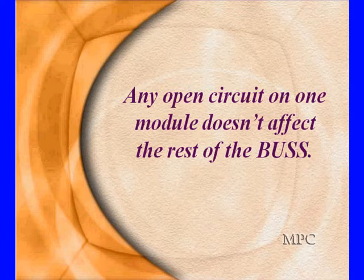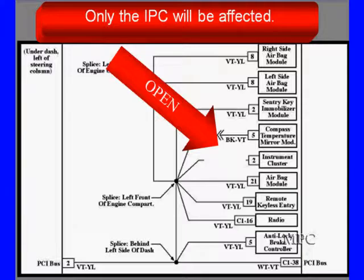But an open in just one wire going to one particular module won't affect the whole bus. For instance, this one wire broke down here at the instrument cluster, we would lose communication with the instrument cluster. In a case like that, we would probably get a U-code indicating we've lost communications with the instrument cluster. Now that's important, because this is a fundamental thing we'll be doing.